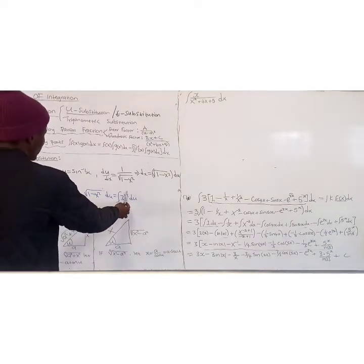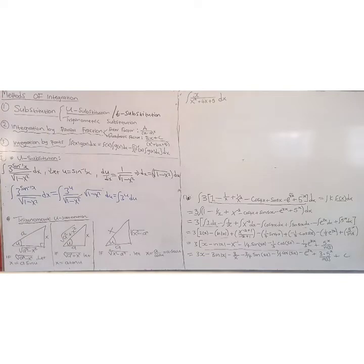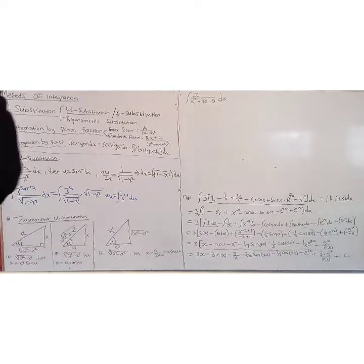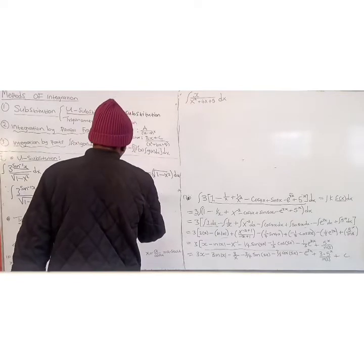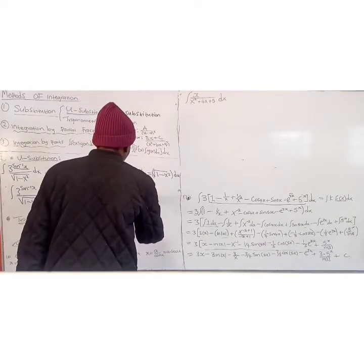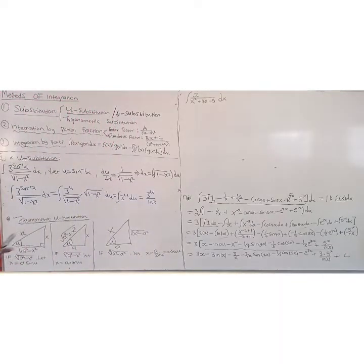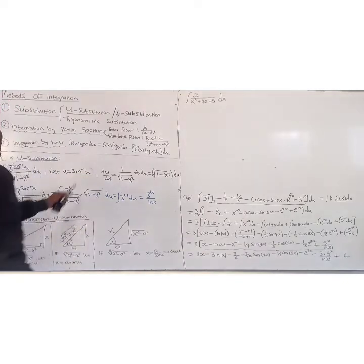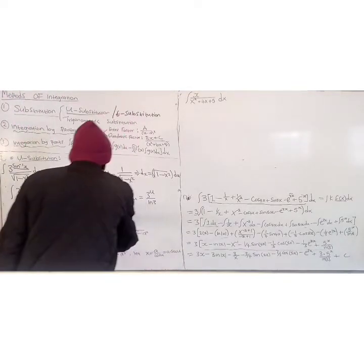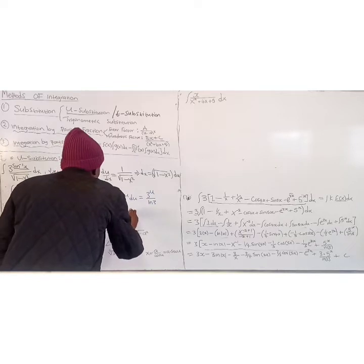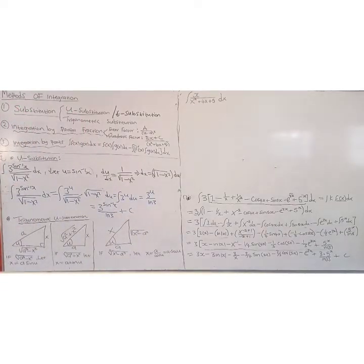From the laws, we recall that when you integrate a to the power x, you get a to the power x over ln(a). Since our a is 3, we get 3 to the power u over ln(3). Substituting back u equals sin-inverse(x), the answer is 3 to the power sin-inverse(x) over ln(3), plus a constant.